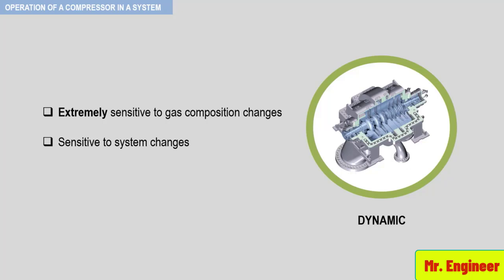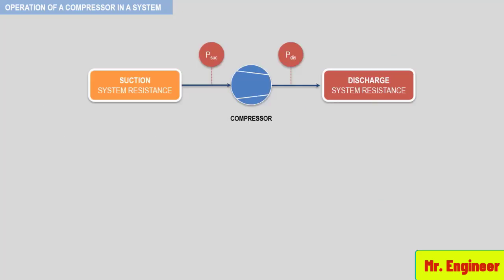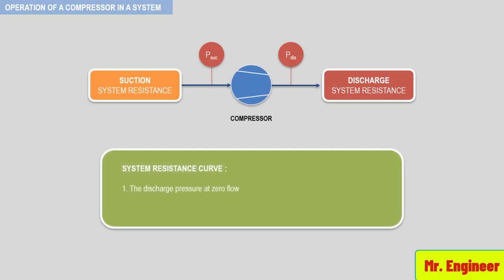One additional point is that the process system characteristic curve can also change. The system resistance curve, which represents the head required by the process, is a result of the terminal pressure at zero flow and the system resistance as the flow changes. A recycle loop, for instance, is comprised of friction loss only and will have a relatively steep system resistance curve. On the other hand, an instrument air compressor pumping into a receiver vessel with a relatively small system resistance will have a system resistance curve that approaches a horizontal line. The combination of a flat dynamic compressor curve and a flat system resistance curve can lead to a very unstable situation. Remember that the operating point is determined by the intersection of the compressor and system resistance curves.